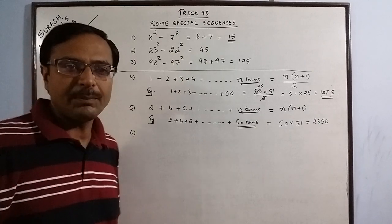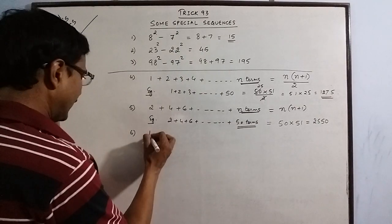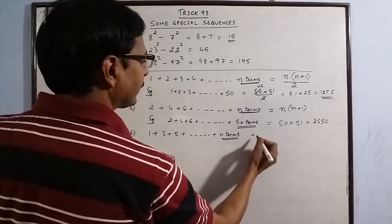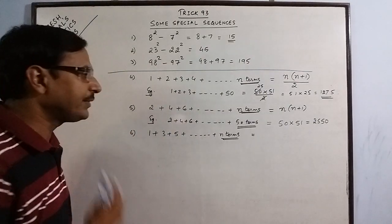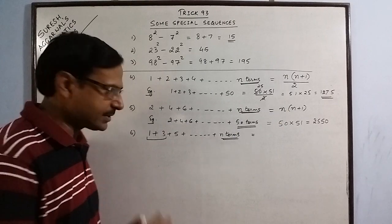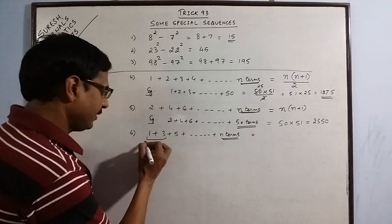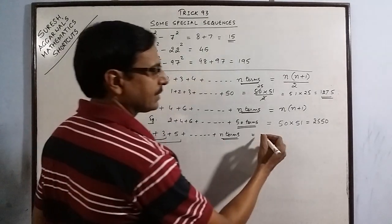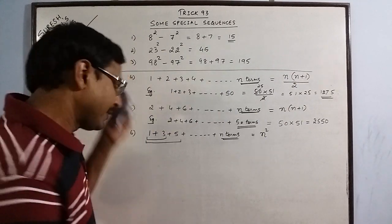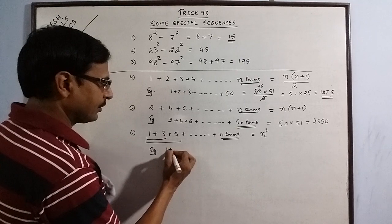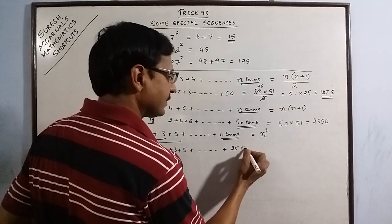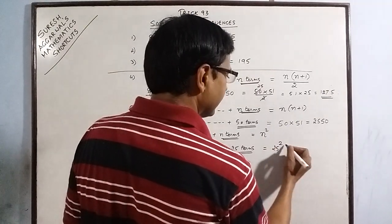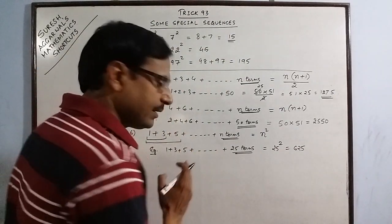Similarly, when you have to find the sum of first n odd numbers — 1, 3, 5 and so on for n terms — this is a very simple concept. If you take 2 odd numbers, their sum is 4, which is 2 square. If you take 3 odd numbers, the sum is 9, which is 3 square. So for n odd numbers, the sum is simply n square. For example, for the first 25 terms of odd numbers (1, 3, 5...), the answer is 25 square = 625.